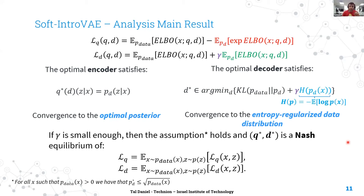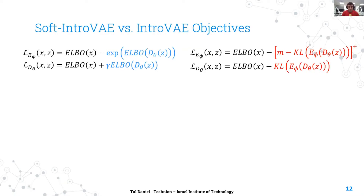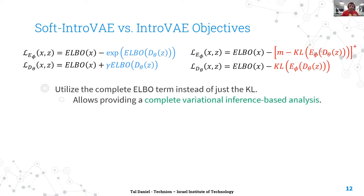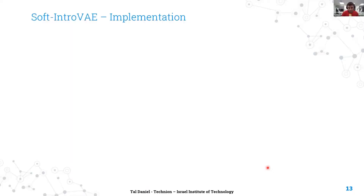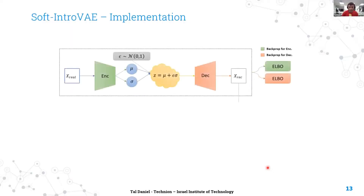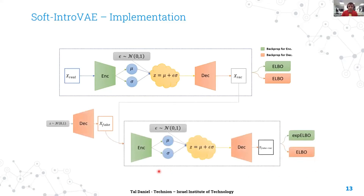Interestingly, Soft Intro VAE does not converge to the data distribution like GANs, but to an entropy-regularized version of it. Experiments on various datasets illustrate that Soft Intro VAE learns distributions with sharper supports than the standard VAE, but without negative effects such as mode dropping. There are two key differences from Intro VAE: first, we utilize the complete ELBO term instead of just the KL term, enabling a full variational inference-based analysis; second, the soft exponential function is much easier to optimize and results in improved training stability. Implementing Soft Intro VAE is simple — take your original VAE architecture, optimize the ELBO of real data for both modules, then add adversarial terms: the exponential ELBO of fake data for the encoder and the ELBO of fake data for the decoder.